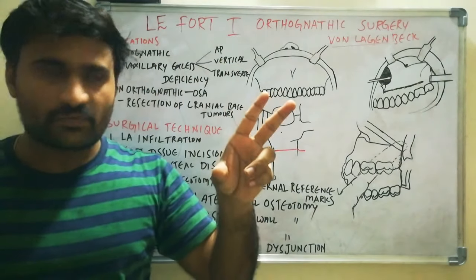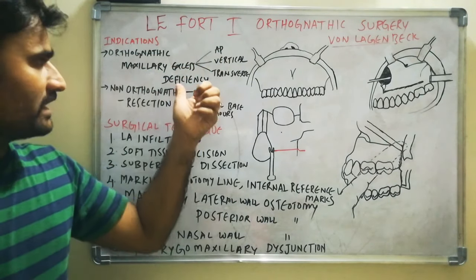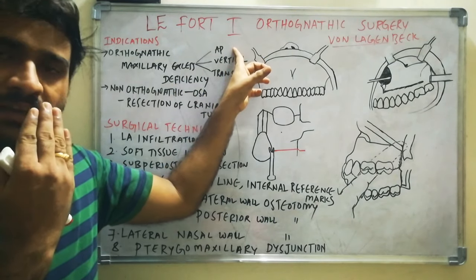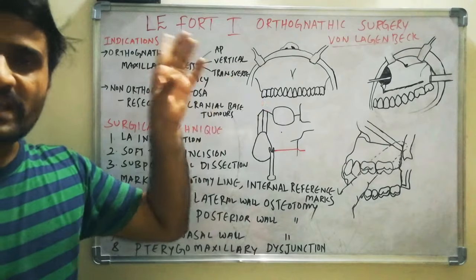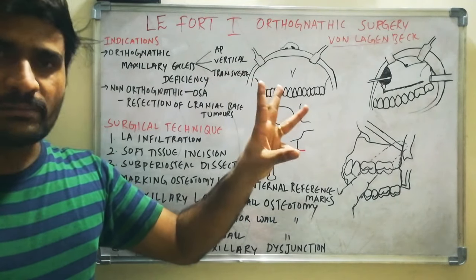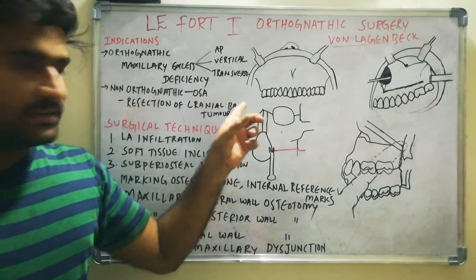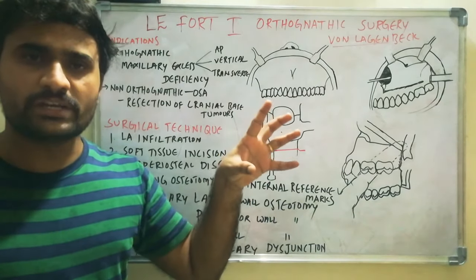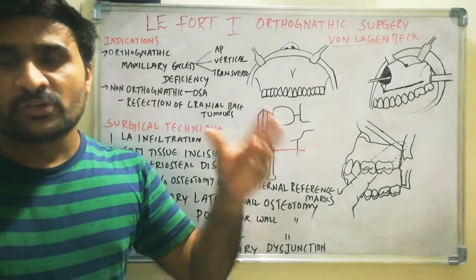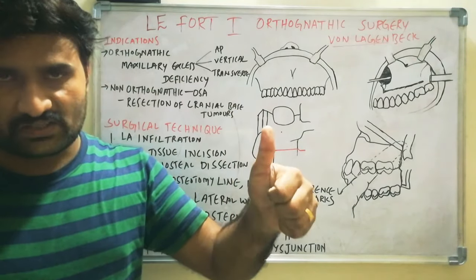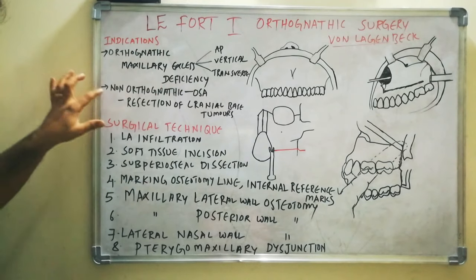There are two main indications for Le Fort 1 Orthognathic Surgery. The first is orthognathic purpose — that is maxillary excess or deficiency in the anteroposterior plane, vertical plane, and transverse plane, including maxillary proclination or retrusion. The second is non-orthognathic purpose: obstructive sleep apnea and resection of cranial base tumors located in the nasopharynx or pterygopalatine fossa, where it provides surgical access.